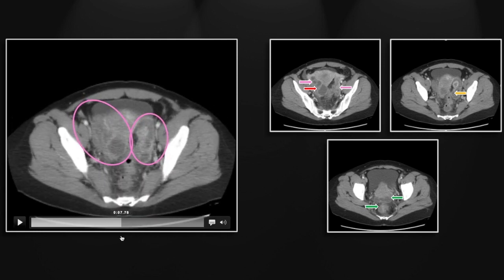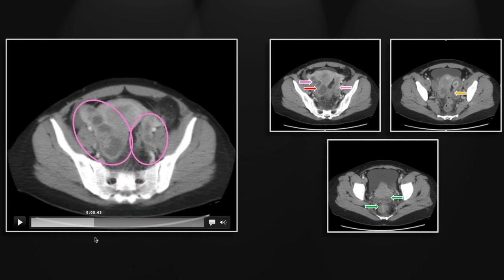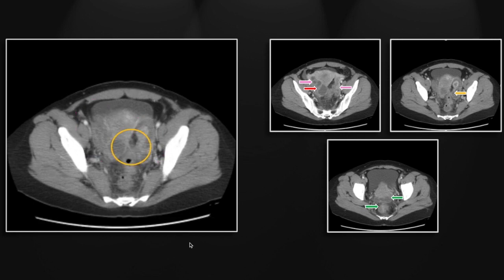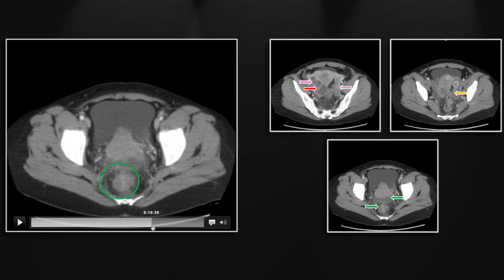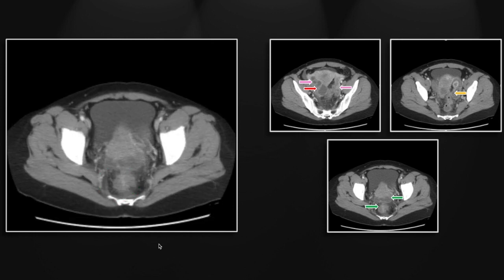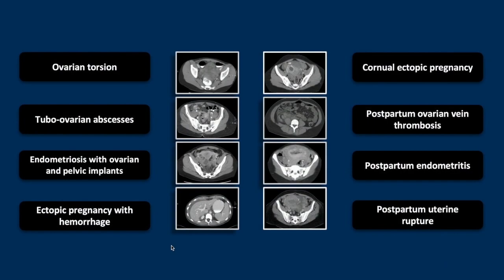So let's appreciate again the dilated tubes, very nicely depicted here. And there again is the bowel tethering. And then lastly, a perirectal implant and the more dependent pelvic ones as well. That is a case of endometriosis with ovarian and perirectal implants.